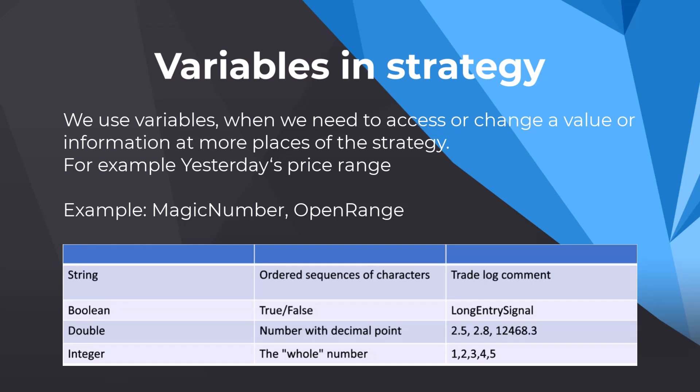Boolean is a very basic variable — zero or one, or true or false. For us it may be information about whether a condition is valid or not. Double is a number with a decimal point, and we are going to use this for price, for example like 2.5 dollars, 2.8, and so on. Then we have integer — a whole number without a decimal point, like 1, 2, 3, and we will use it to refer, for example, to candles: two candles ago, three candles ago.